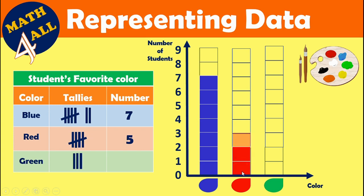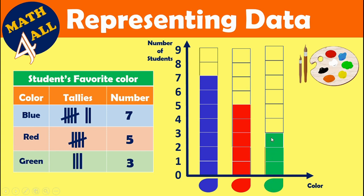Red is the favorite color for five students. For green, we count one, two, three — three students like green, so shade three squares. Three students prefer green. And that was our lesson — thank you!